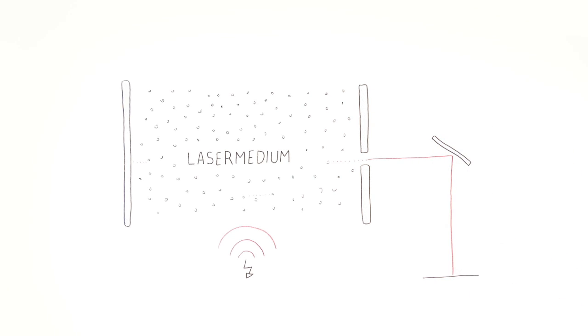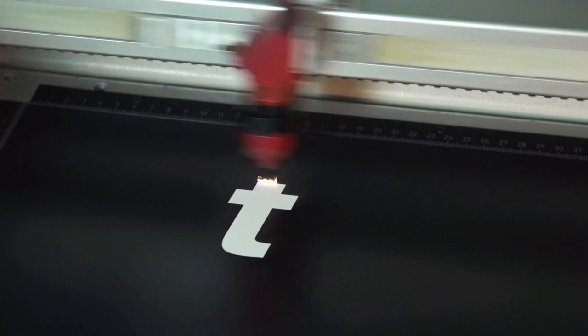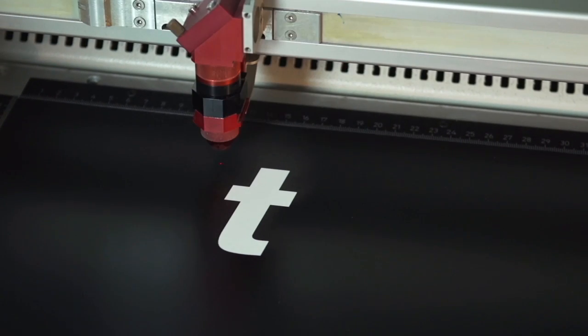This beam can leave the laser through the partially transmissive mirror, and is directed onto the material, where it engraves, marks, or cuts the desired motif.